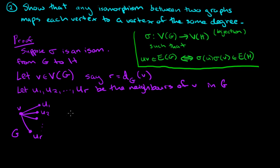So we know that V, U_i is an edge in the graph G for i equals 1, 2, all the way up to R. That's what this tells us because these are the neighbors. And these are exactly the neighbors, so V doesn't have any other vertices that are adjacent to it.